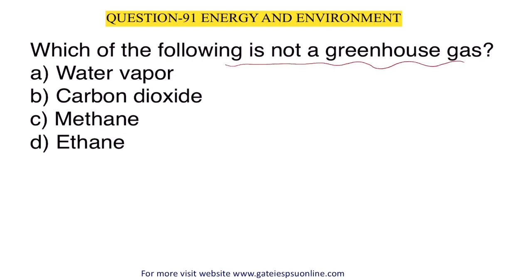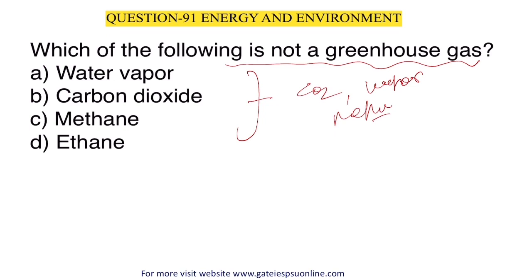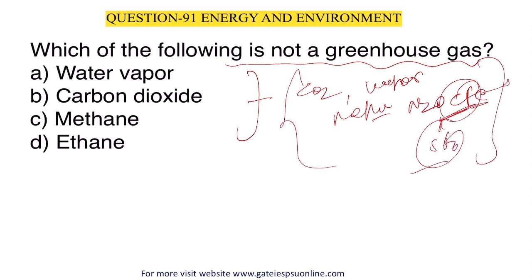Next question: which one of the following is NOT a greenhouse gas? Greenhouse gases are responsible for the greenhouse effect. Examples include CO₂, water vapor, methane (CH₄), N₂O, CFCs (chlorofluorocarbons), and SF₆. Ethane is NOT a greenhouse gas. So the answer is option D.